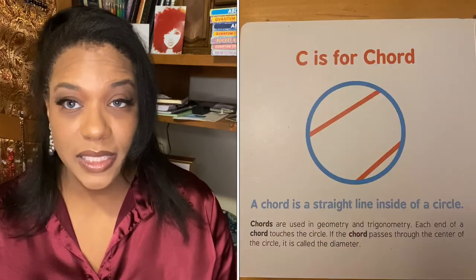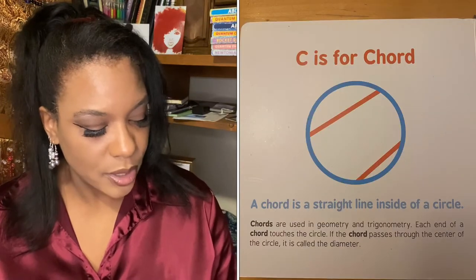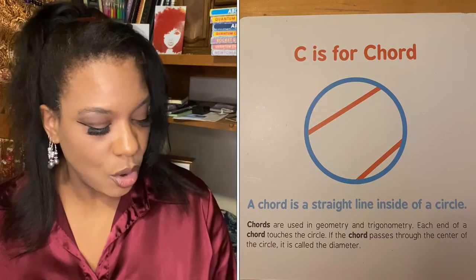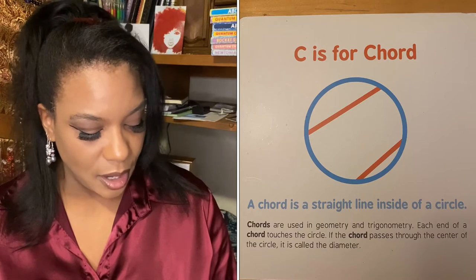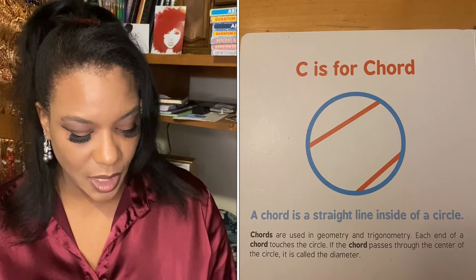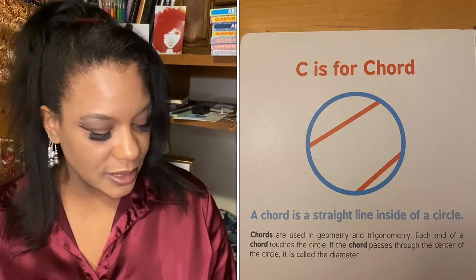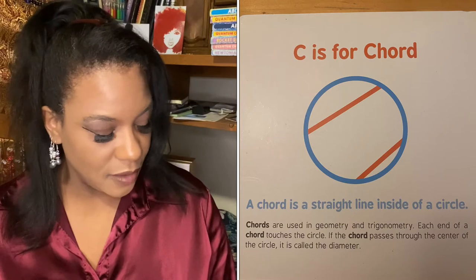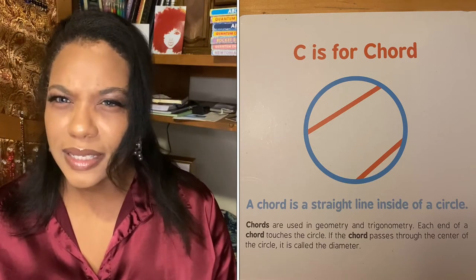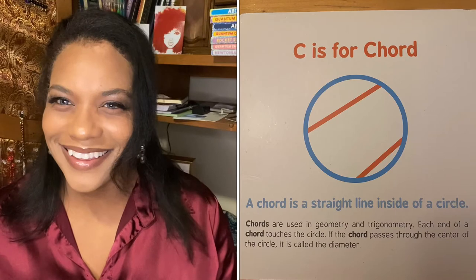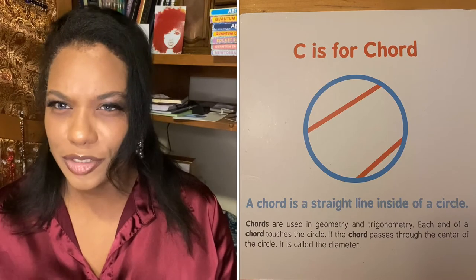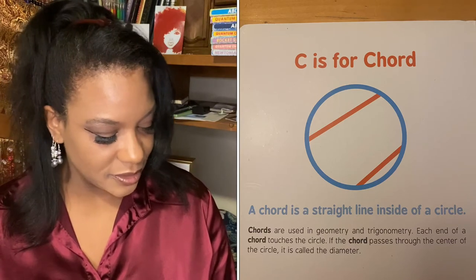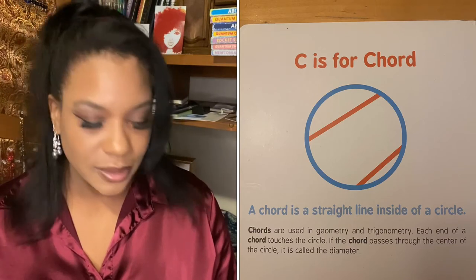C is for chord. A chord is a straight line inside of a circle. Chords are used in geometry and trigonometry. Each end of a chord touches the circle. If the chord passes through the center of the circle, it is called the diameter.